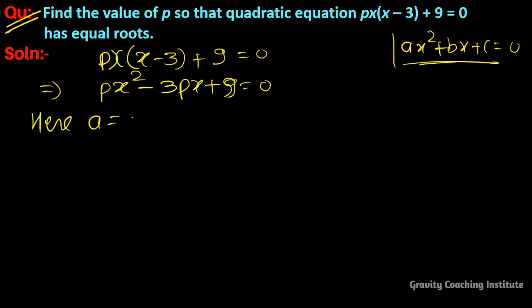Here a = p, b = -3p, c = 9. And according to the question, D is equal to 0.